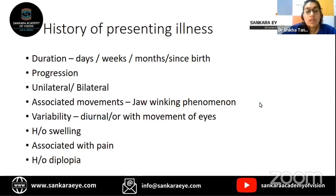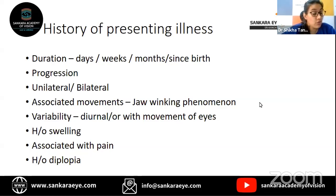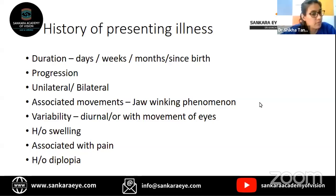First, ask about duration — it can be days, weeks, months, or since birth. If it's since birth, that means it is congenital ptosis. If it has occurred very acutely, then we need to thoroughly investigate the patient — it can be neurological, myogenic, or even traumatic. Second, ask whether it is progressing or not. Third, whether it is unilateral or bilateral, because it will change our plan of treatment and management.